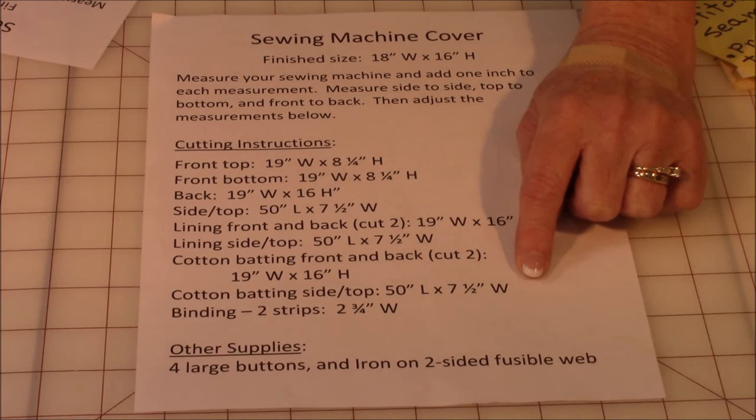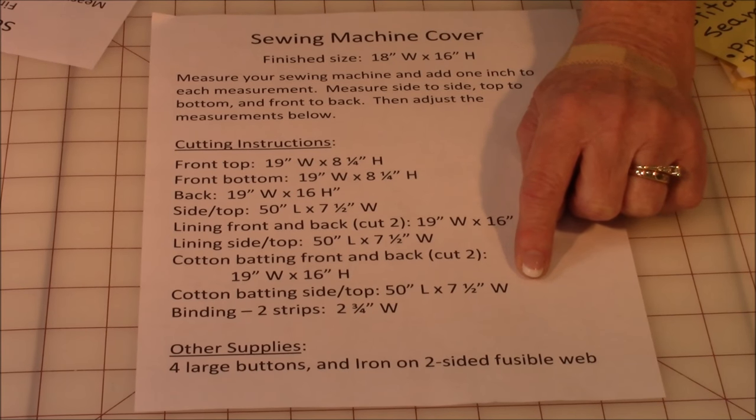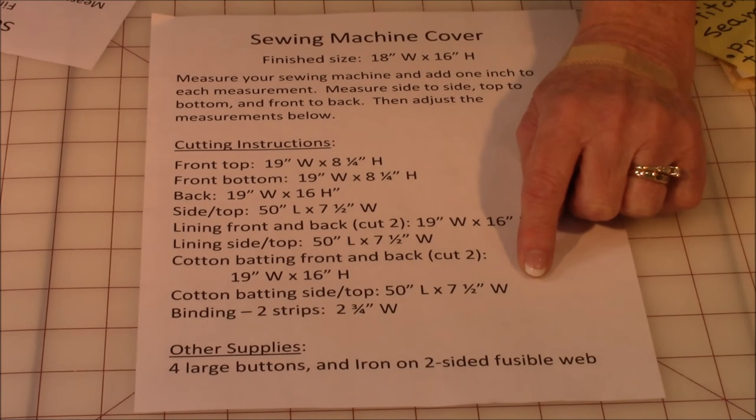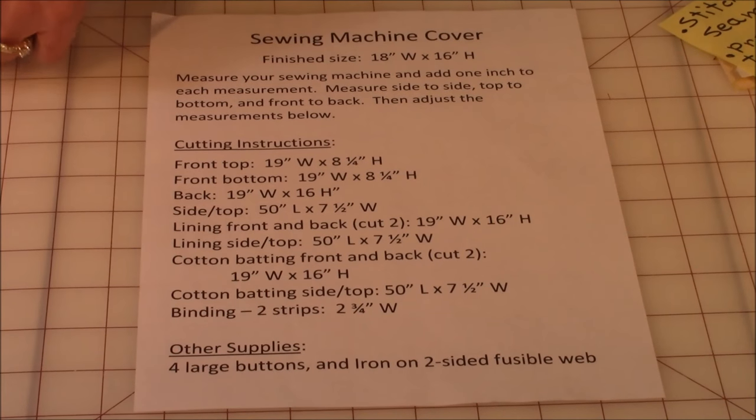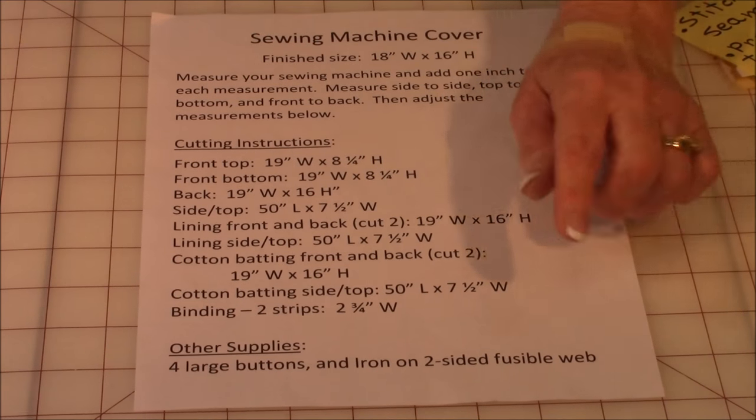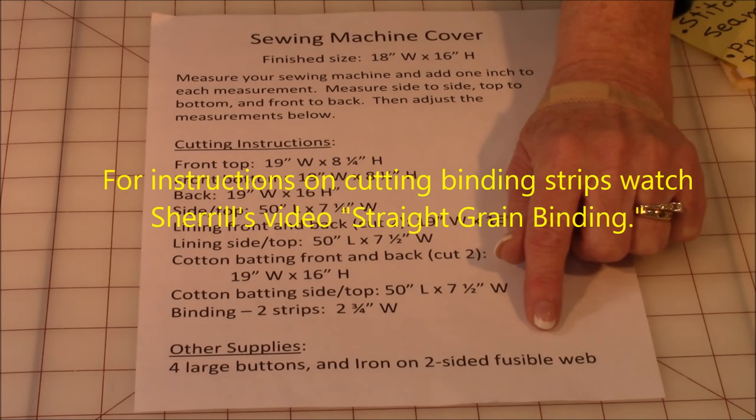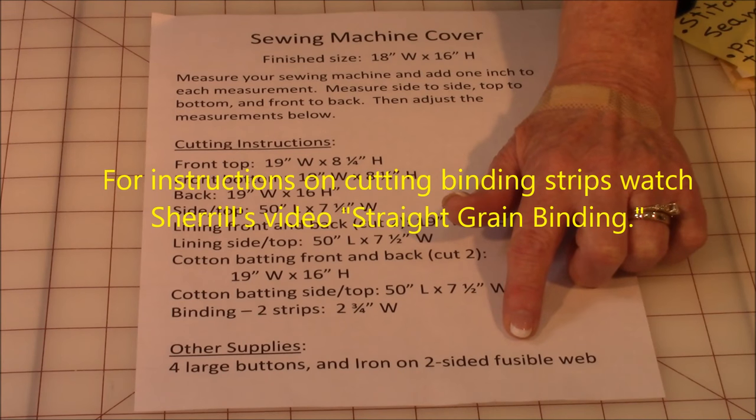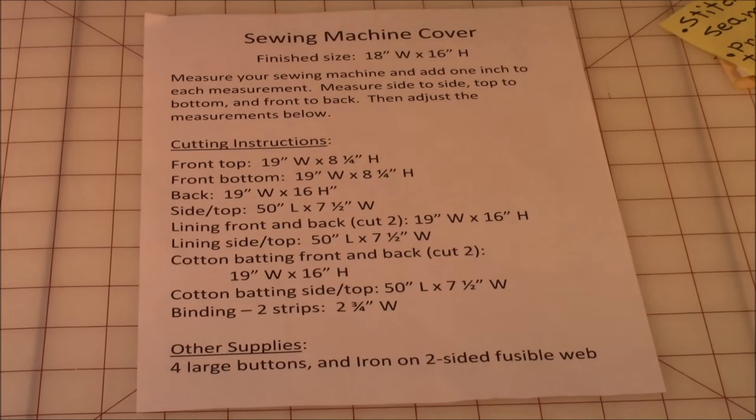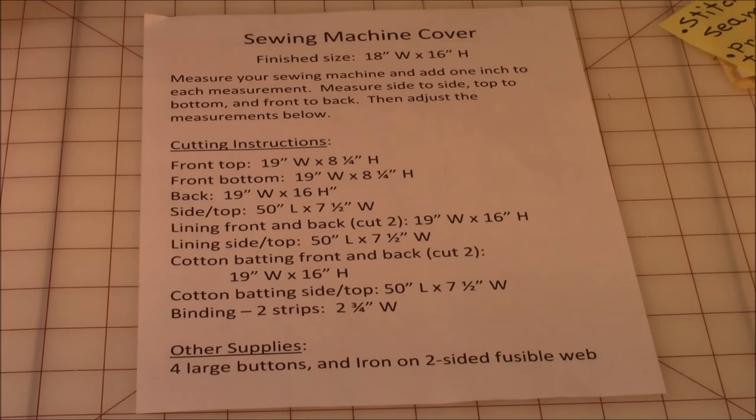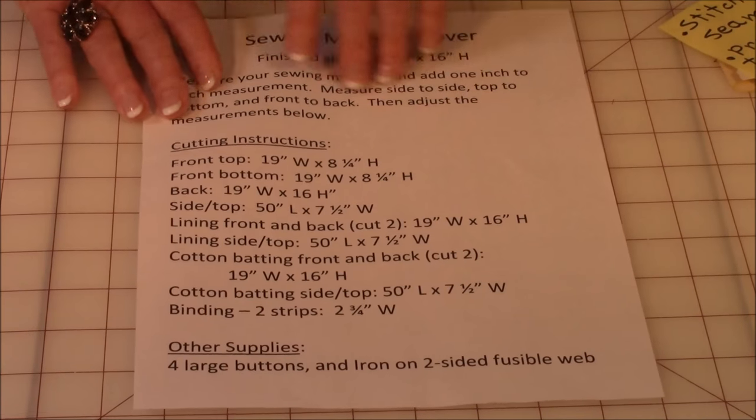And your binding strips, make sure they're two and three quarter inches wide. You're going to need two. If you don't know how to cut your binding strips, watch my video Straight Grain Binding. And then two more things, four large buttons and then two sided fusible webbing to put on the spools of thread. Now let's start putting it together.